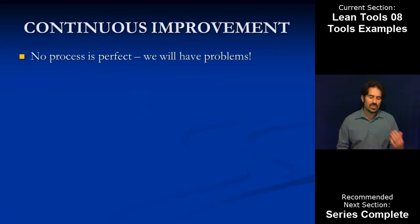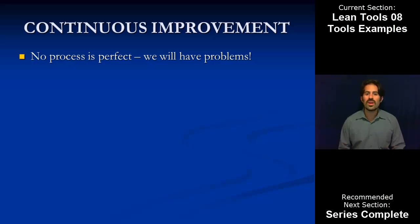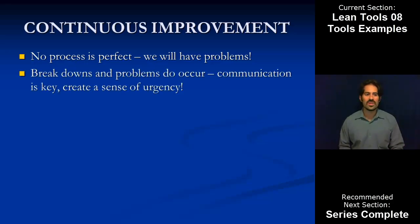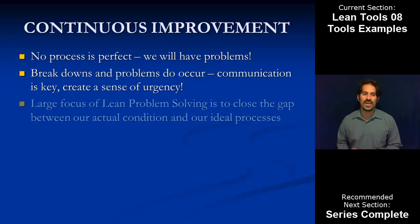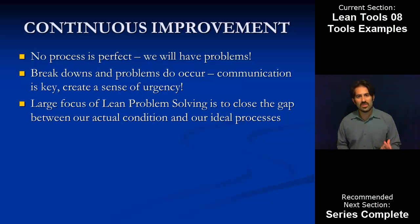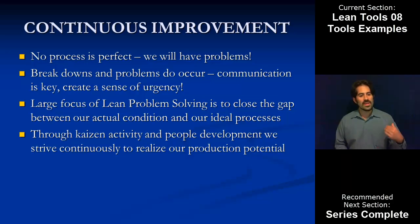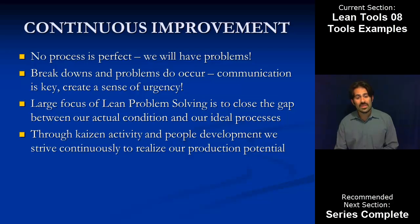The last thing to look at is this idea of continuous improvement. In terms of developing and using our tools, it's important to remember that no process is ever perfect, we're going to have problems, and these breakdowns are going to occur. But by implementing these tools and continuously working on leveling them up, we can create better communication that helps support creating a sense of urgency to address things in real time. That's really how we start to get more efficient — through being nimble and responsive. That ties back to our lean problem solving initiatives, whose real focus is to close the gap between our actual condition, where we are now, and where we'd like to be ideally. Through Kaizen activity and developing our human resources, we continuously strive to realize our production potential — that ideal condition.